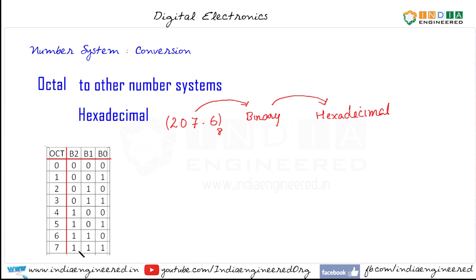So all we need to do is look it up in the table. So for 7 we have 111, for 0 we have 000, for 2 we have 010. So we have done with this and the decimal part is 110.